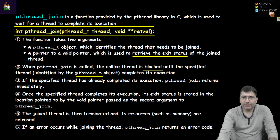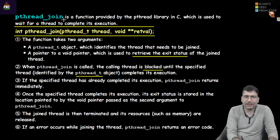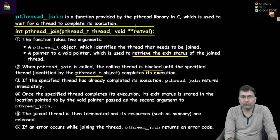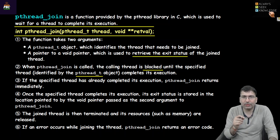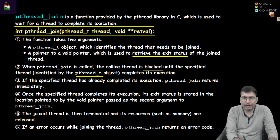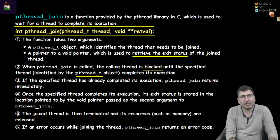Once we create a thread we use another function, pthread_join. pthread_join is a function provided by the pthread library used to apply a wait on the currently executing thread, so that the newly created thread terminates first and then the original thread terminates. It is used to wait for a thread to complete its execution.